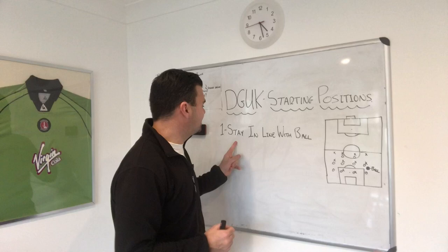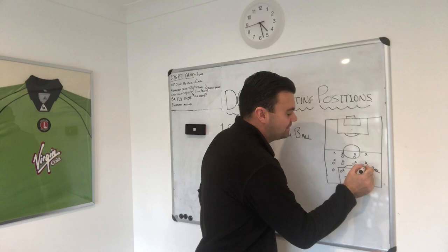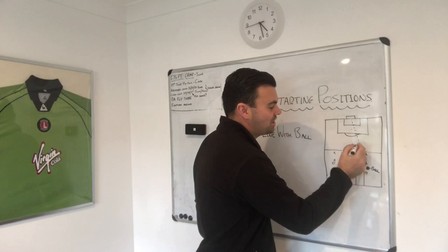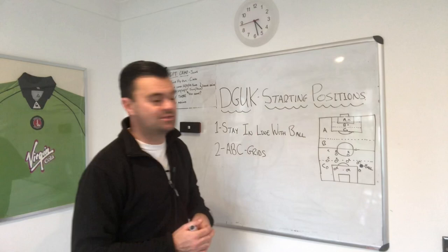Step one. The first thing we look at is standing in line with the ball. So if the ball's down here and you're in the goal up there, you're basically looking to run a line from the ball to the middle of the goal — and that's the line you're going to be starting on in relation to the ball.